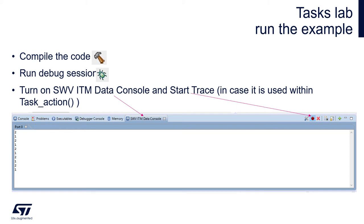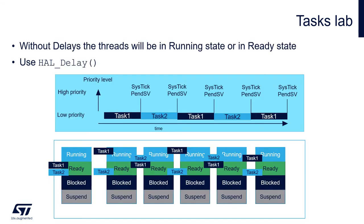We can compile using the hammer button and after it's done, start a debug session after connecting the board. In my case, task_action is programmed to send data over the ITM interface, so argument one and two are passed via ITM and observed in the Single Wire Viewer ITM Data console in STM32CubeIDE. As both tasks have the same priority with the preemptive model, we see task two, task one, task two, task one — working one by one as expected.